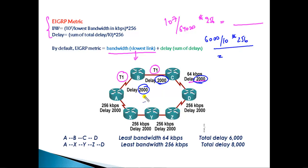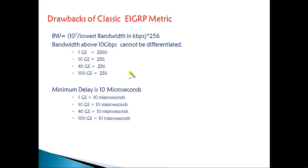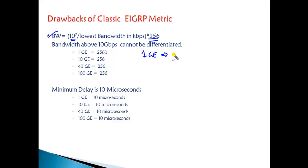The same applies to delay: it sums all delays — in this scenario 2000 + 2000 + 2000 = 6000 — then divides by 10 and multiplies by 256. This is the overall delay from A to D. The metric calculation is done automatically by EIGRP. Now, because of these formulas, if you're using a 1-Gbps link the cost comes to around 2560, and if you're using a 10-Gbps link the cost comes to around 256.